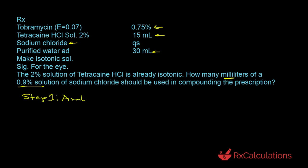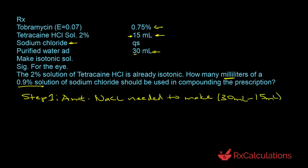In step 1, we determine the amount of sodium chloride needed to make the preparation isotonic if there was nothing else in there. Typically you'd use the total volume of 30 ml, but because the 15 ml of tetracaine hydrochloride is already isotonic, we don't need to adjust that portion. So the volume you're adjusting is 30 ml minus 15 ml, which equals 15 ml. Identifying this is one of the most important aspects of this question — getting it wrong makes all subsequent calculations wrong.